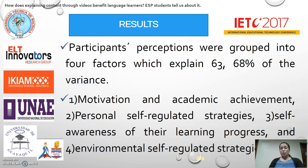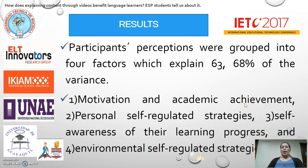The participants' perceptions were grouped into four factors, which explained 63.78% of the variance. The first factor is motivation and academic achievement. This factor was composed of answers indicating that students' desire to participate in class had increased, their learning experience had improved, and their motivation towards learning English had also increased. Participants reported a high impact in this factor, making it the main factor among the four.